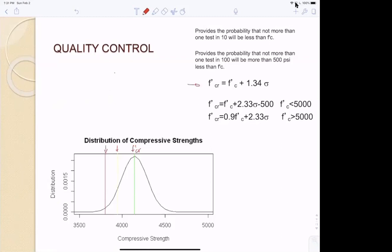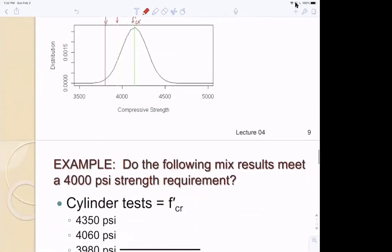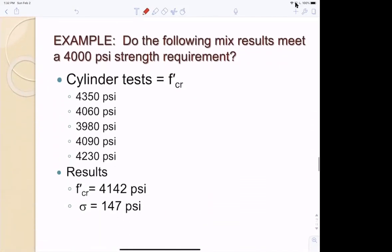And this one here, one out of a hundred times, it'll be less than F prime C minus 500. So 10% of the times you'll be below your specified strength. That seems like a lot. And 1% of the time you'll be 500 PSI below your specified strength.